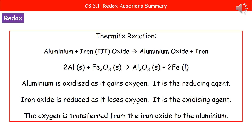One of the best demos we can do as a redox demo is the thermite reaction. We start off with aluminium and iron 3 oxide, and the reaction produces aluminium oxide and iron. If you look at the balanced equation in the middle, aluminium starts with no oxygen, but in the product we've got aluminium oxide, so it's gained oxygen. We can say that aluminium is oxidised because it's gained oxygen.